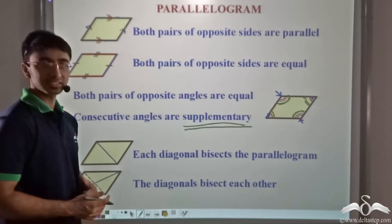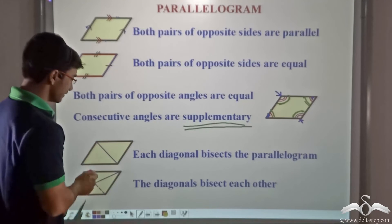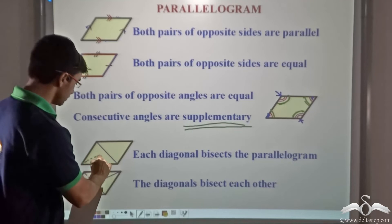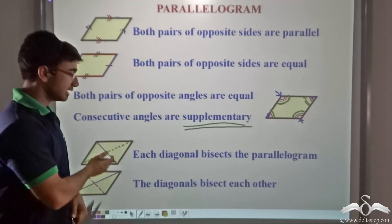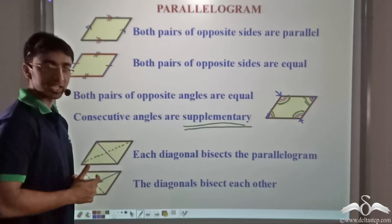Each diagonal bisects the parallelogram. As we saw, if we consider any diagonal, be this diagonal as has been shown or the other diagonal, each of these diagonals will bisect the parallelogram into two equal triangles.